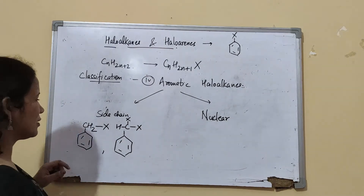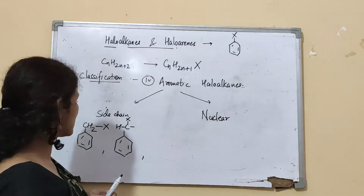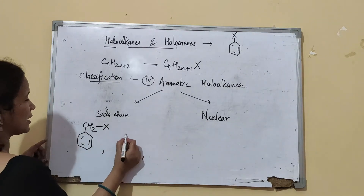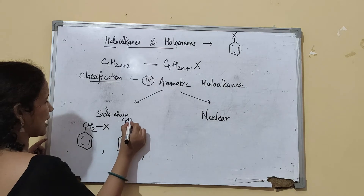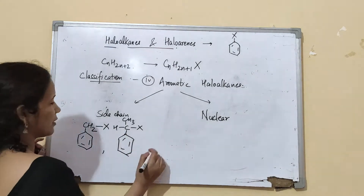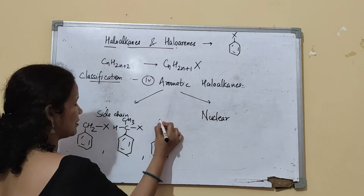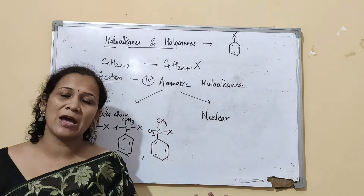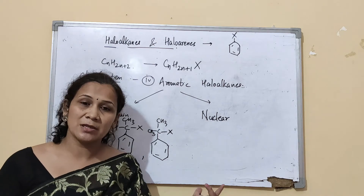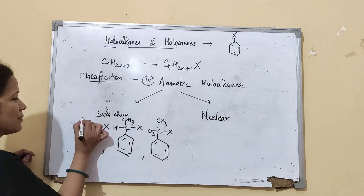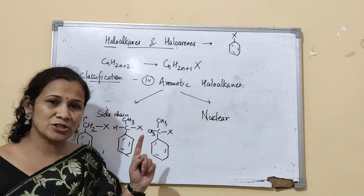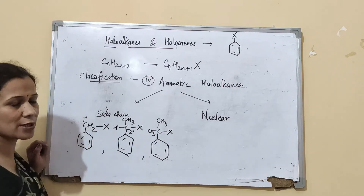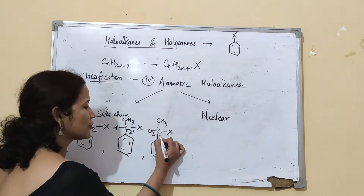There are different possibilities for side chain derivatives. The carbon bearing the halogen can be one degree (attached to only one other carbon atom), two degree, or three degree. These have common names: the one-degree side chain is called benzyl halide, the two-degree is benzyl (secondary), and the three-degree is benzohalide.